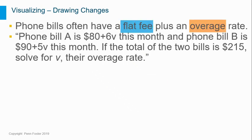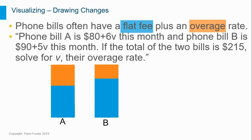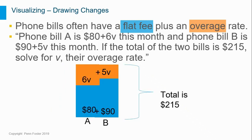How about a more complicated problem? Cell phone bills often have a flat fee plus an overage rate. Phone bill A is $80 plus 6V this month, and phone bill B is $90 plus 5V this month. If the total of the two bills is $215, solve for V, their overage rate. This problem has a lot more going on, but we can still think in terms of change. Each bill has a change within it — the starting fee plus the overage. In this case, we are not finding the difference between them. The other information in the problem is the total, so we know that adding them together gives $215.